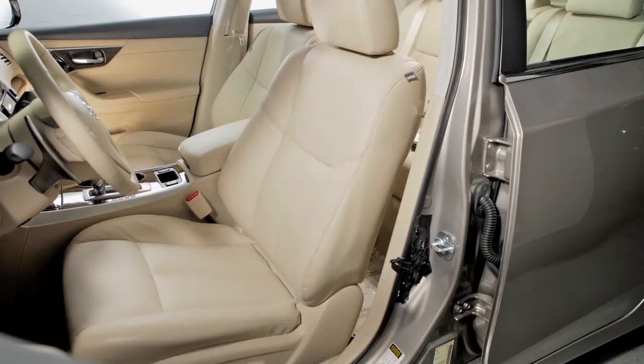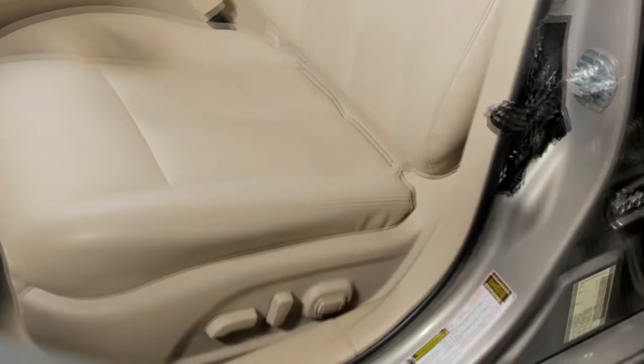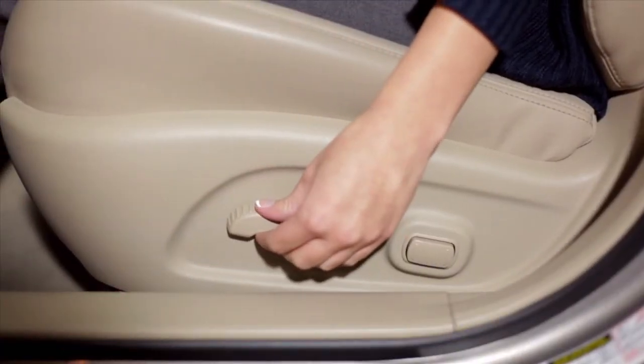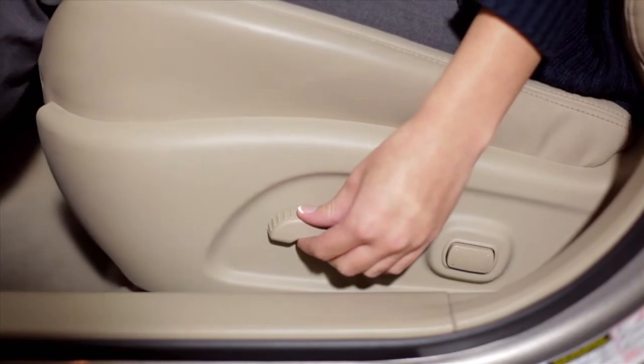To make the seat slide forward or backward, look for this switch on the outer edge of the seat. Slide it forward or backward and the seat will move in that direction.